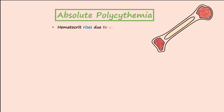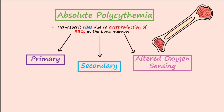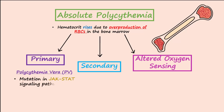Absolute polycythemia is a rise in hematocrit due to overproduction of red cells in the marrow. The three main classes of absolute polycythemia include primary, secondary, and altered oxygen sensing. The most common type of primary polycythemia is polycythemia vera, abbreviated PV, which results from a mutation in the JAK-STAT signaling pathway that leads to overproduction of red cells, white blood cells, and platelets.